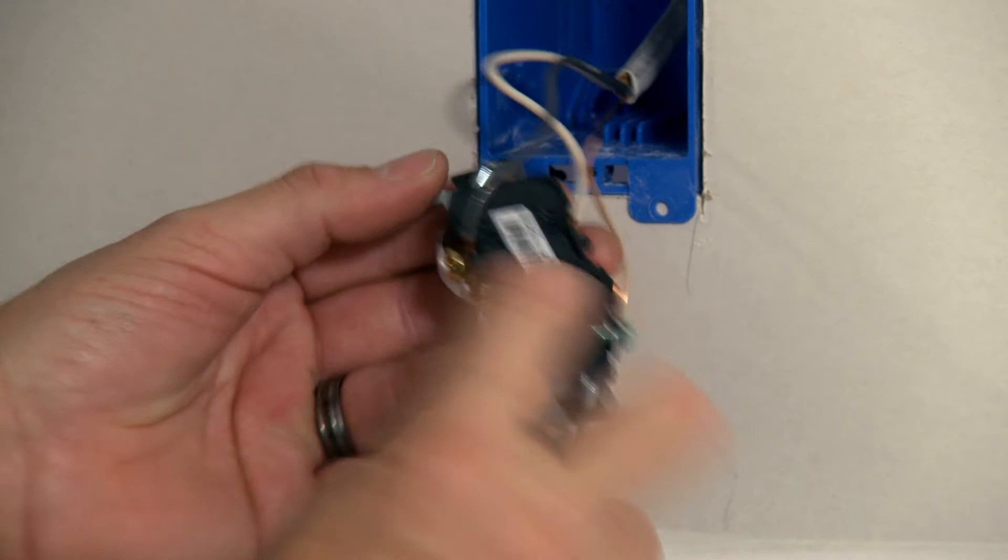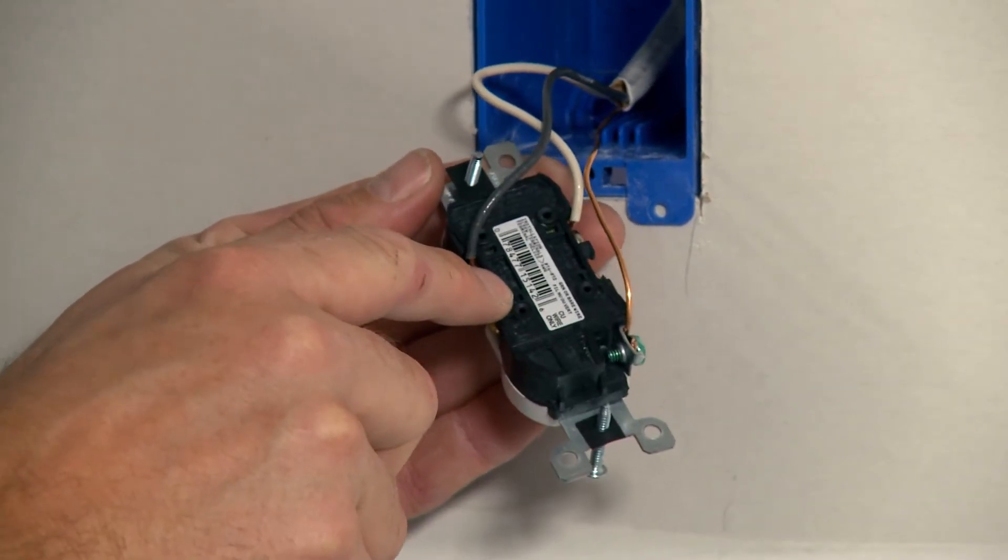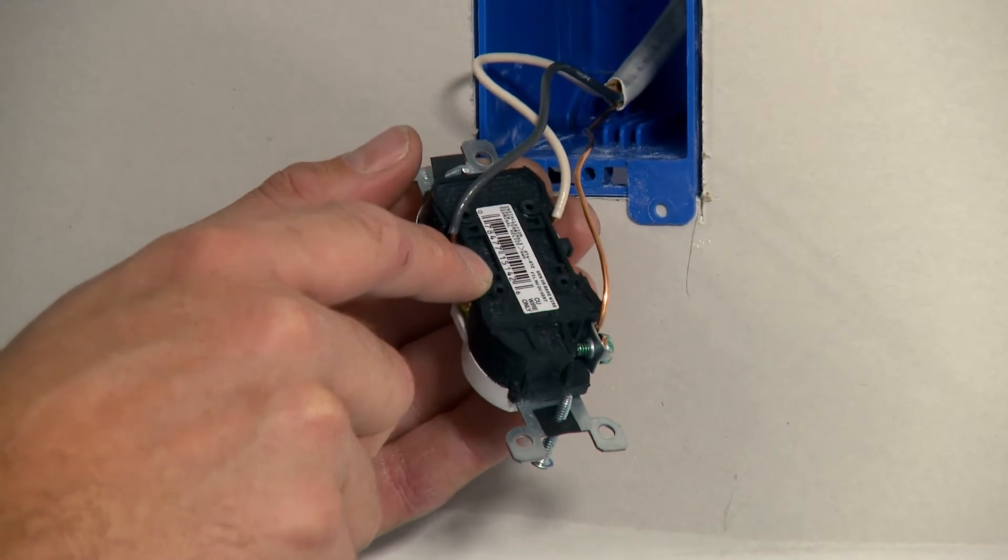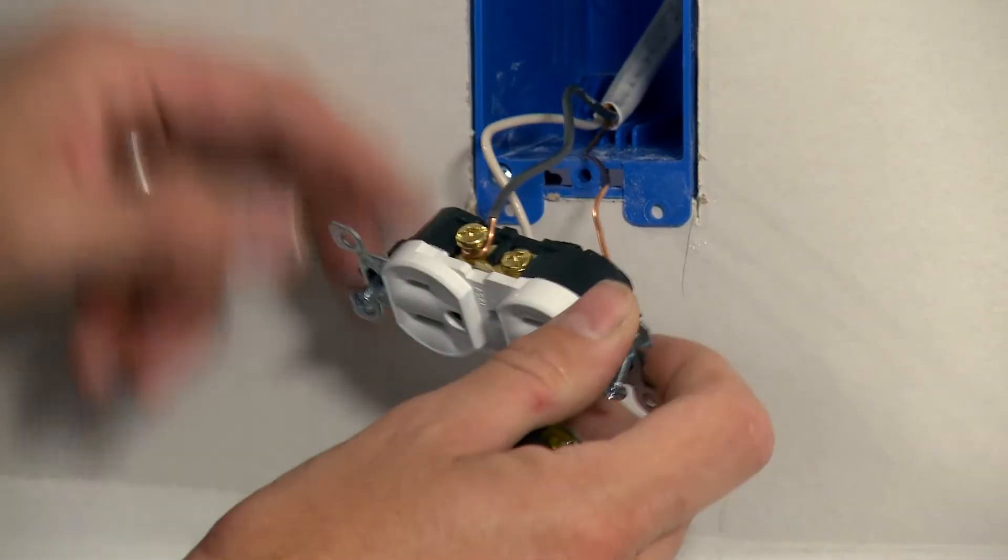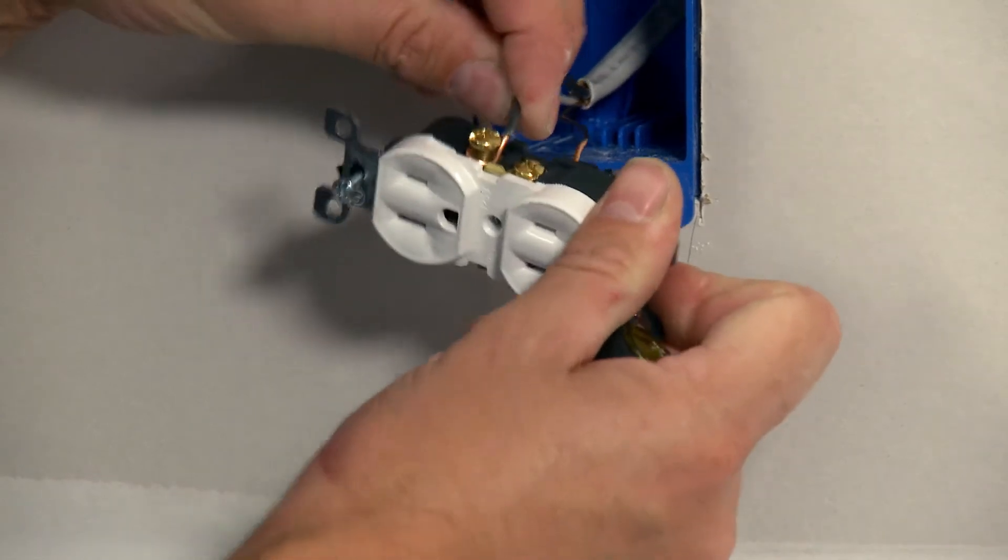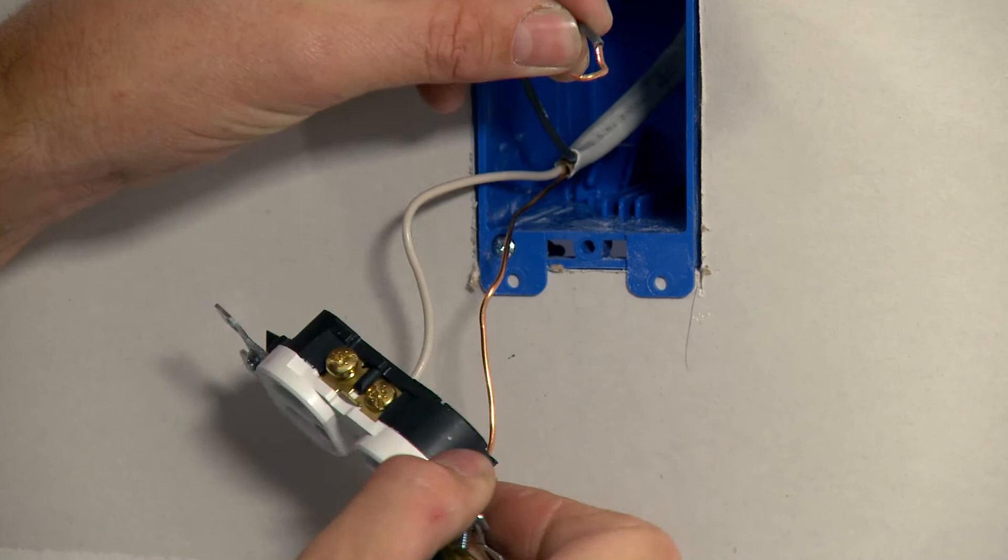If they are pushed in these holes back here, you will need a small bladed screwdriver to insert right there. That takes the pressure off the clamp and allows you to pull the wire directly out. If they're wrapped around the screw like this, sometimes it'll take a little work, but for the most part, they should come right off like that.